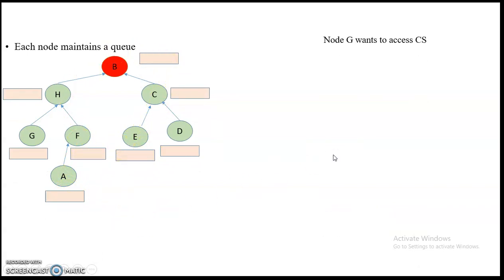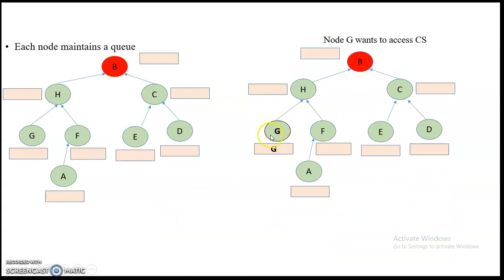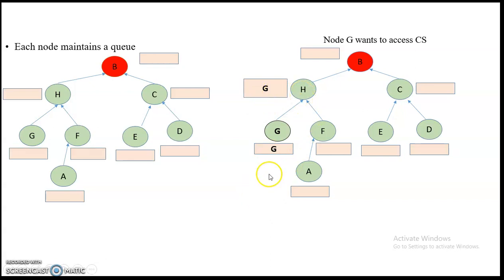Node G wants to access the critical section. Since B is holding the token, meaning B is currently in the critical section, G will first add itself to its own queue, then send a request to its immediate neighbor H, asking H to add G's name to H's queue. H in turn sends a message to B, updating B's queue with H's name.